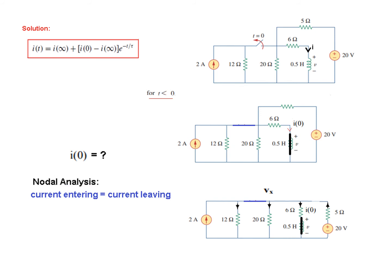First we will find Vx and then we will find I(0). For nodal analysis, current entering equals current leaving. Now these two currents are entering and these three are leaving.